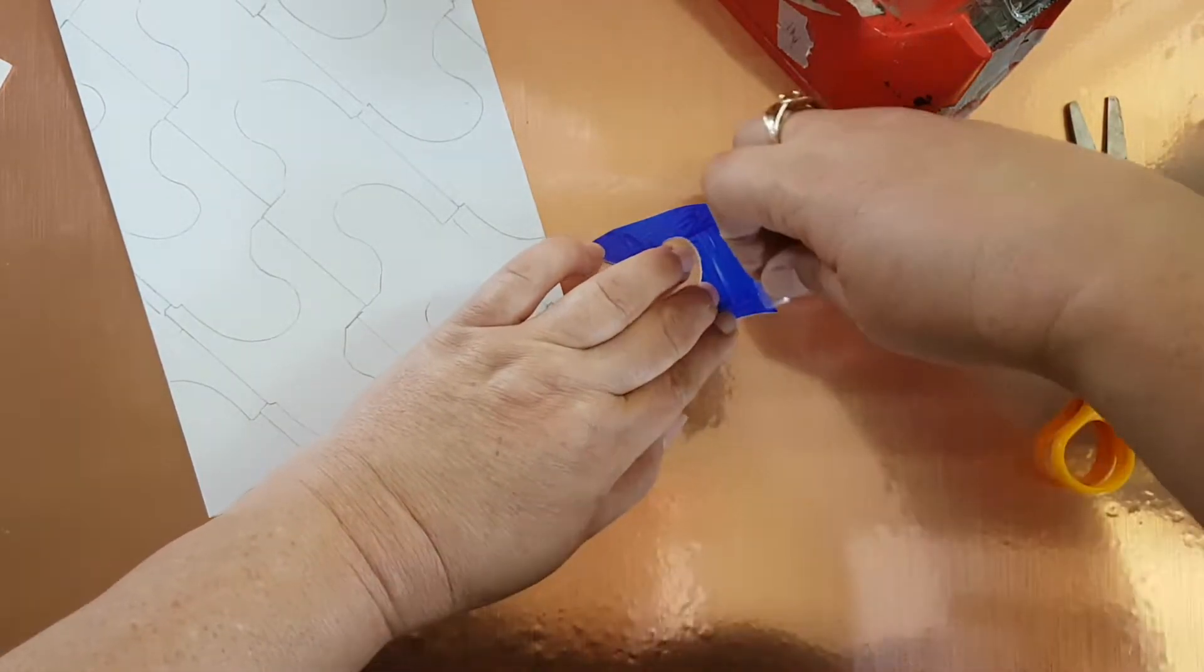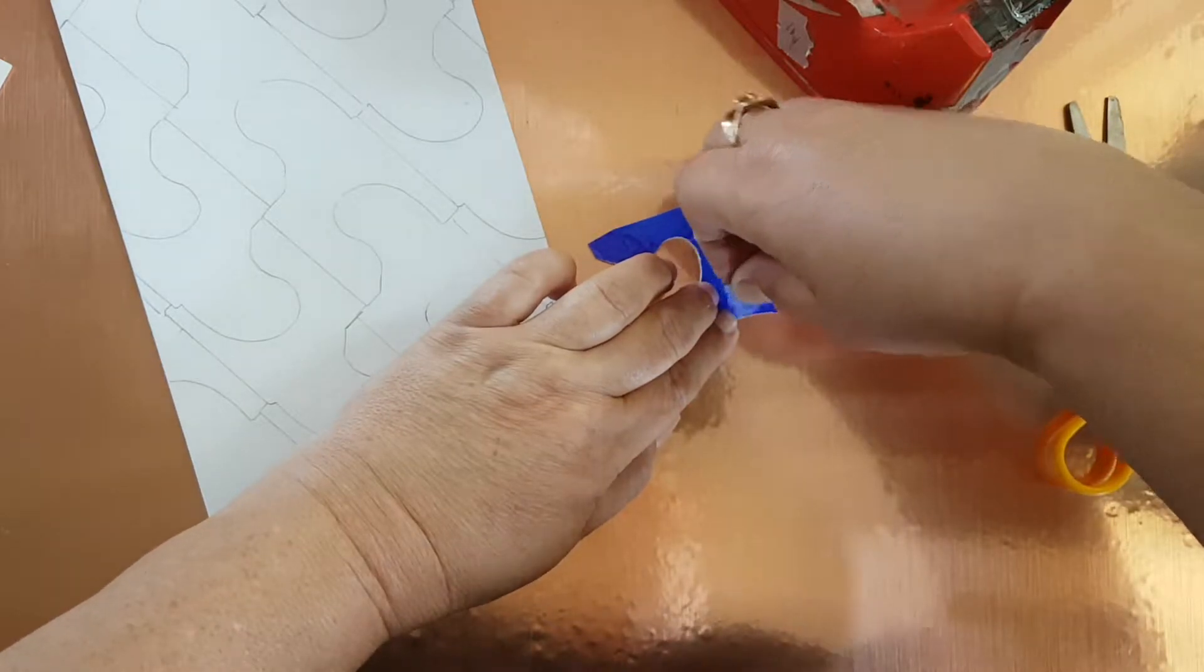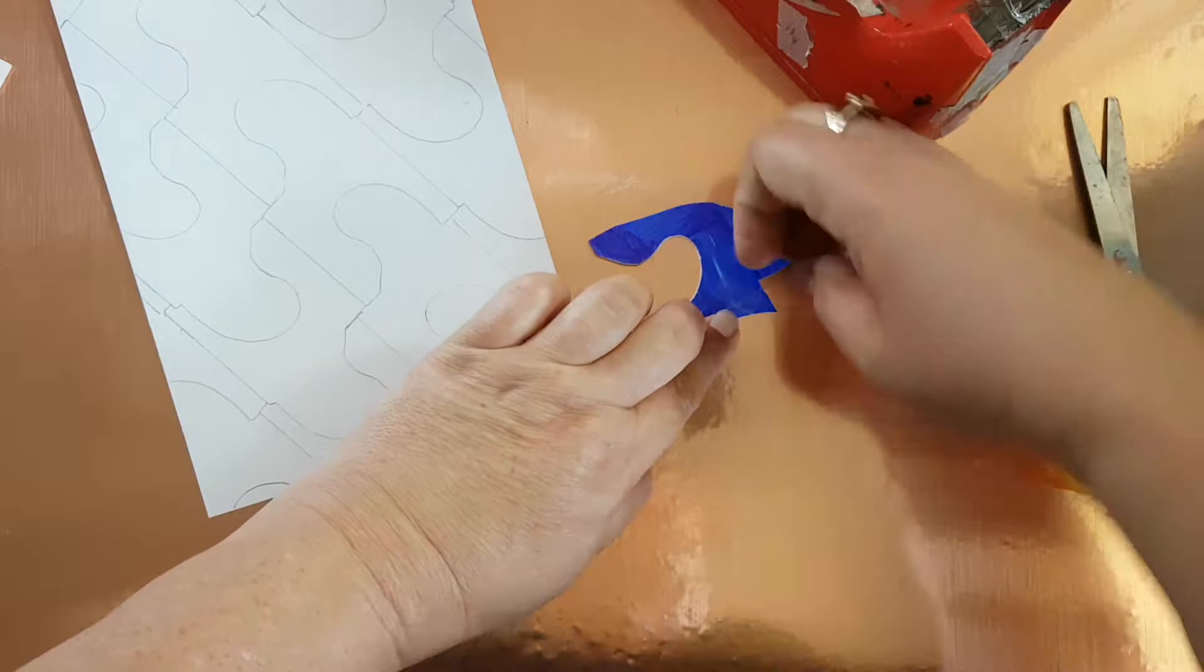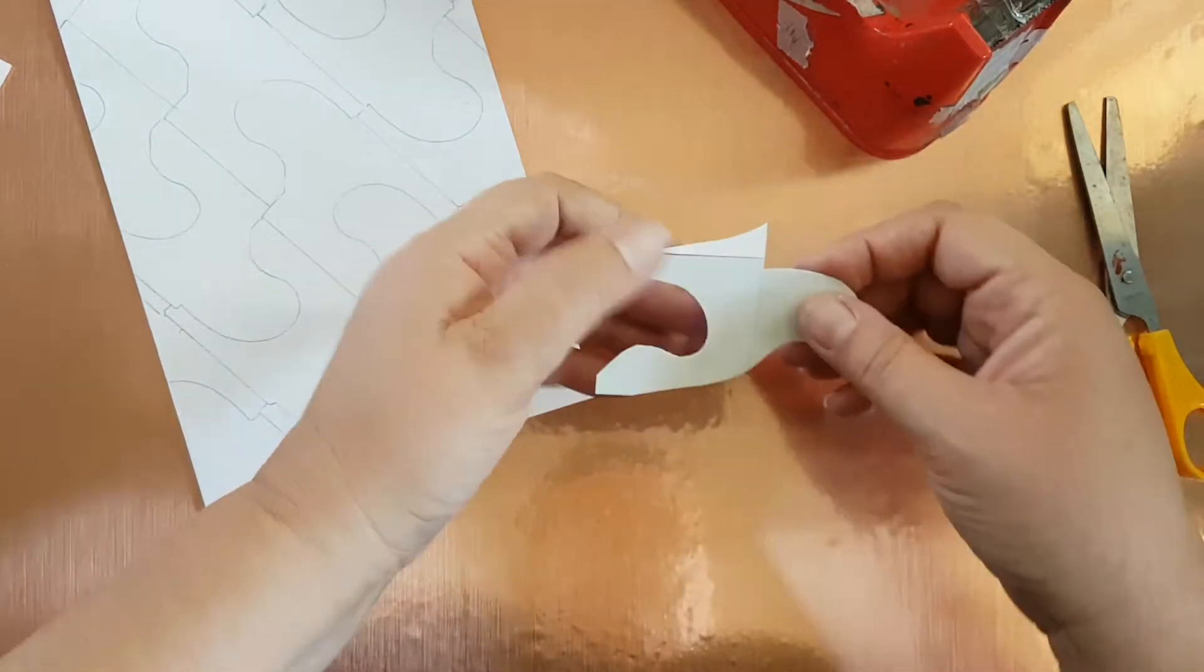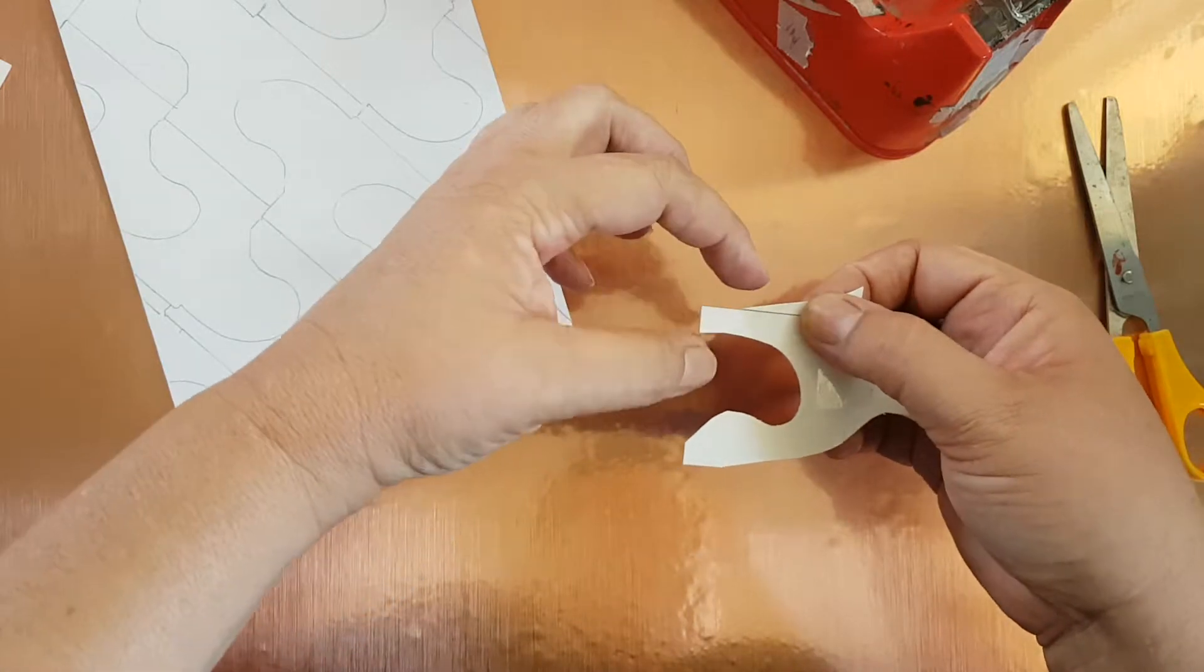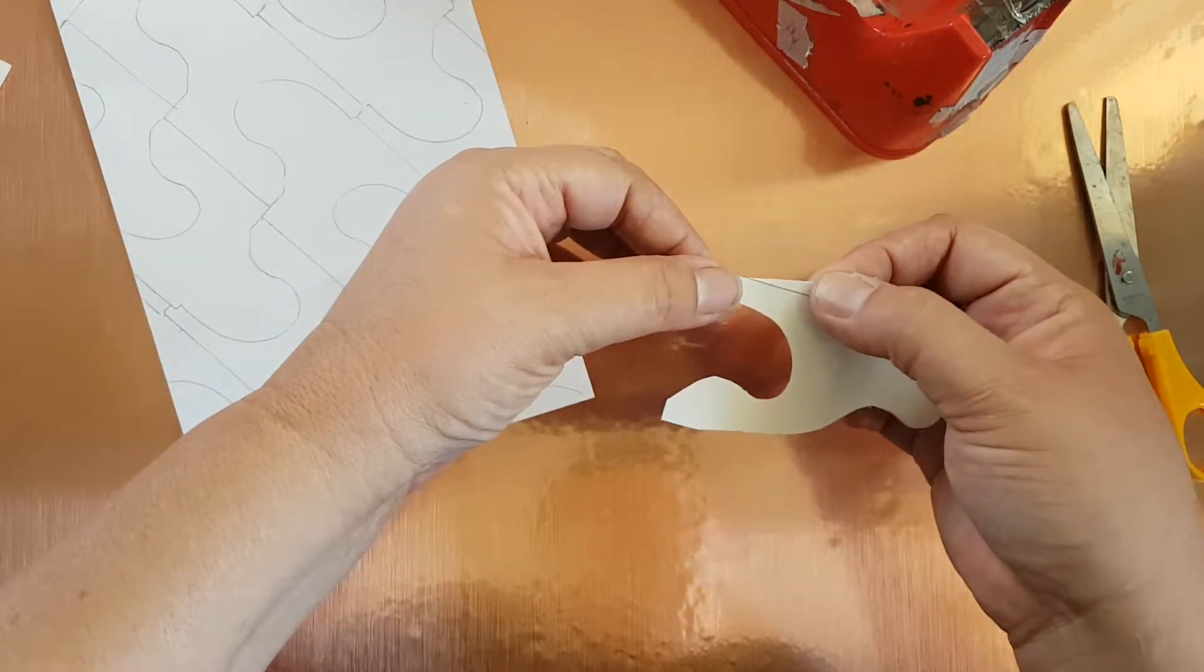So I'm going to hold this together, making sure that edge is level. Hold that together with my fingers, making sure there's no sticky tape poking over the top. And remember, we don't want any gaps. That's a good fit. I'm going to try and get a bit of sticky tape down here because that's sort of moving a bit.